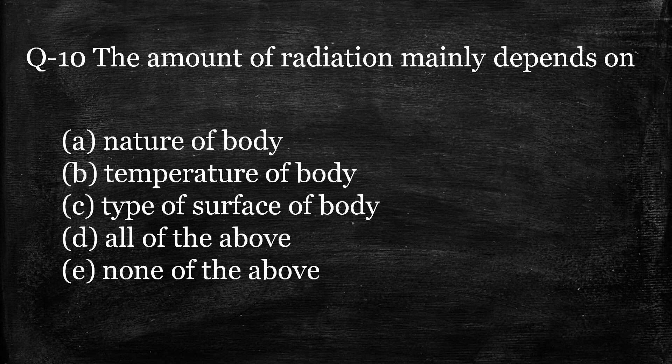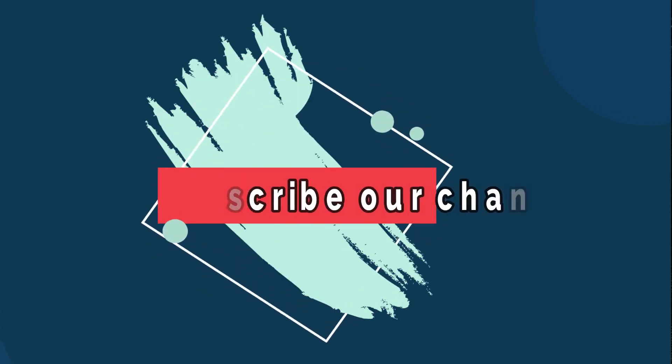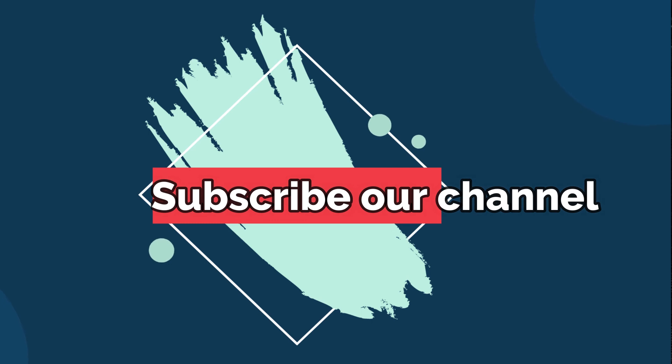Question number ten: the amount of radiation mainly depends on — option A: nature of the body, option B: temperature of the body, option C: types of surface of the body, option D: all of the above, option E: none of the above. The amount of radiation depends on the nature, temperature, and surface type of the body, so the right answer is option D.